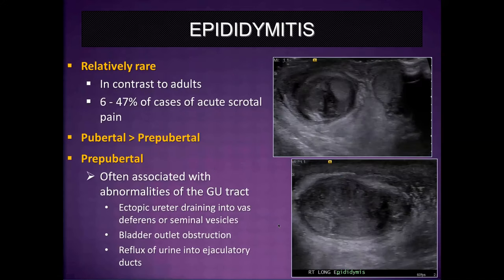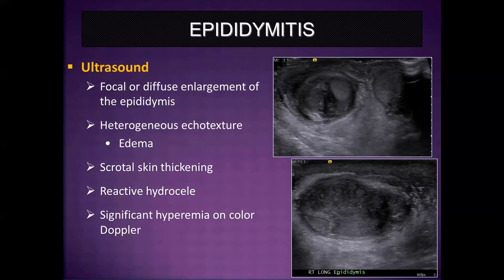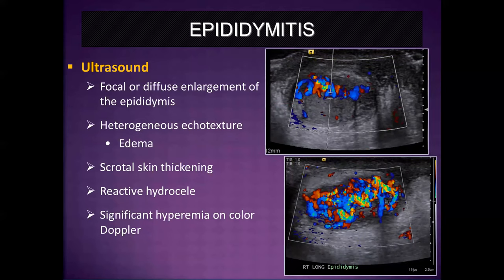Epididymitis is actually relatively rare in pediatric patients in contrast to adults, accounting for about 6% to 47% of cases of acute scrotal pain in children. It's more common in the pubertal male. When it does occur in the prepubertal male, it's often associated with abnormalities of the GU tract — for example, an ectopic ureter draining into the vas deferens or seminal vesicles, bladder outlet obstruction, or reflux of infected urine into the ejaculatory ducts. You can appreciate why the hyperemia seen with torsed appendix testis can be confused with epididymitis.